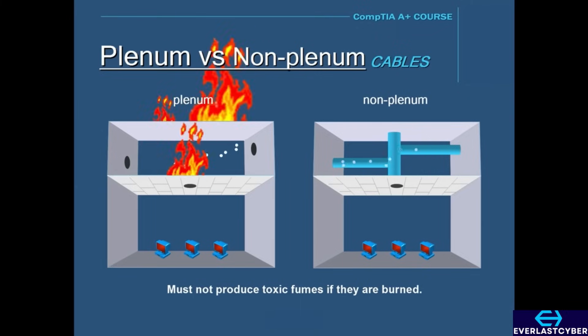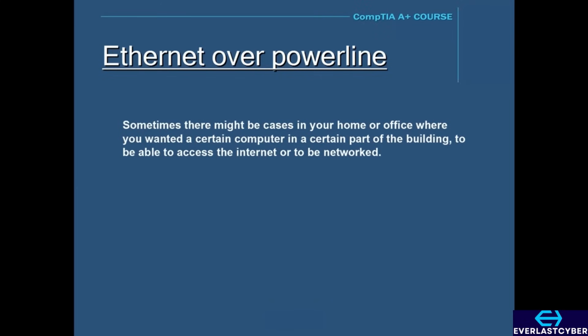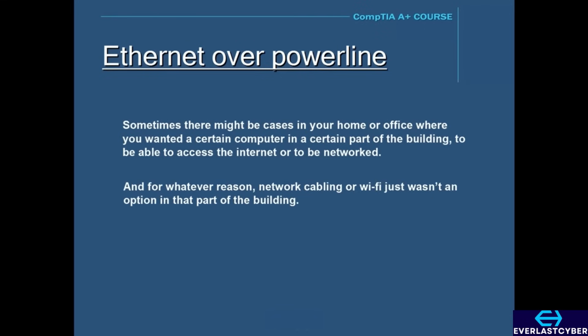Sometimes in a home or office, you may want a computer in a certain part of the building to access the internet or be networked, but network cabling or Wi-Fi isn't an option due to difficulties in the structure of the building, interference, or other reasons. The 1901 standard gives the ability to network using the existing electrical system of the building.